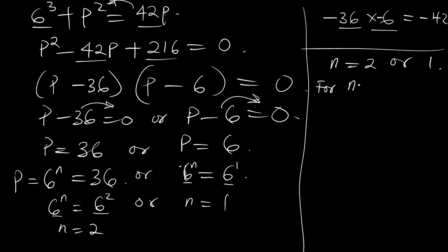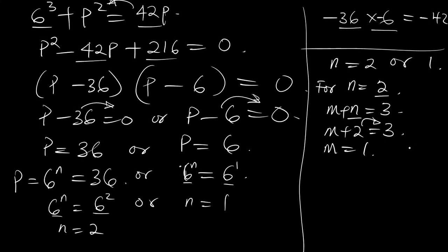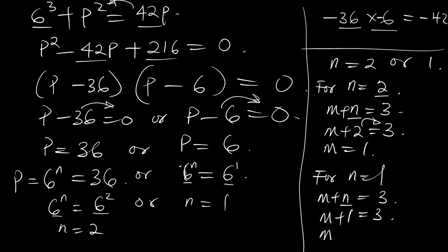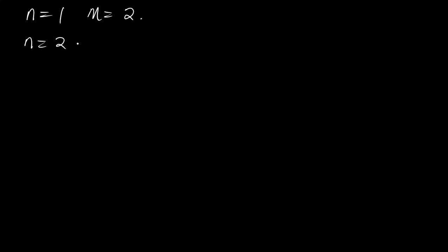For the condition when n equals 2: using m plus n equals 3, replacing n with 2 gives m plus 2 equals 3, so m equals 1. For n equals 1: replacing n with 1 in m plus n equals 3 gives m plus 1 equals 3, so m equals 2. Therefore, when n equals 1, m equals 2, and when n equals 2, m equals 1.